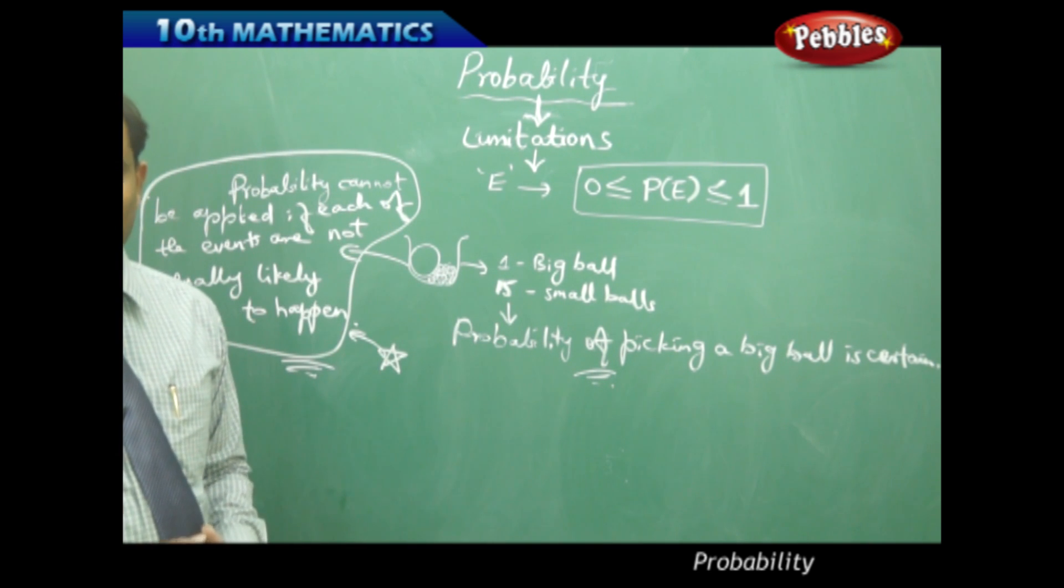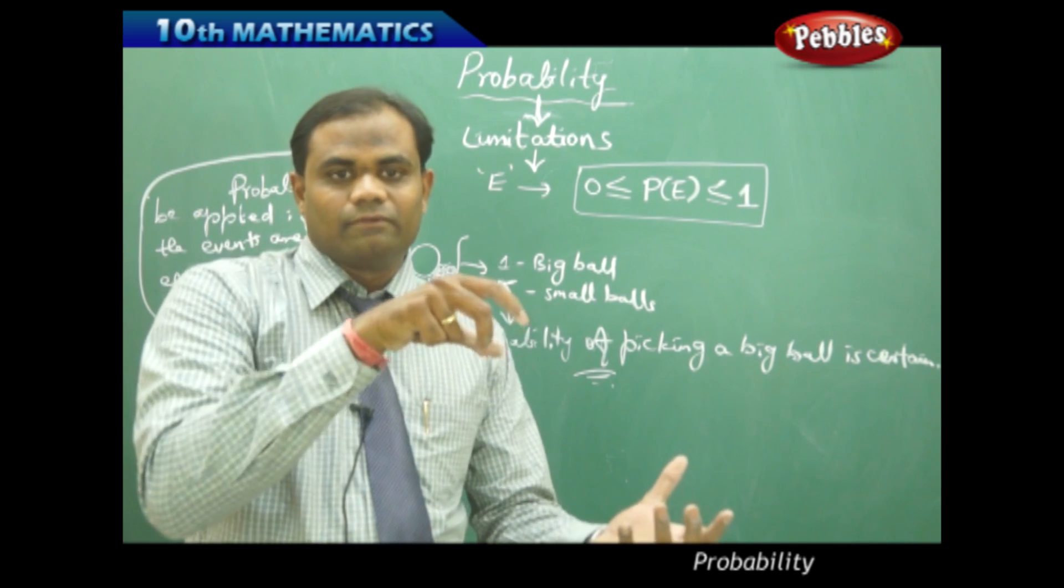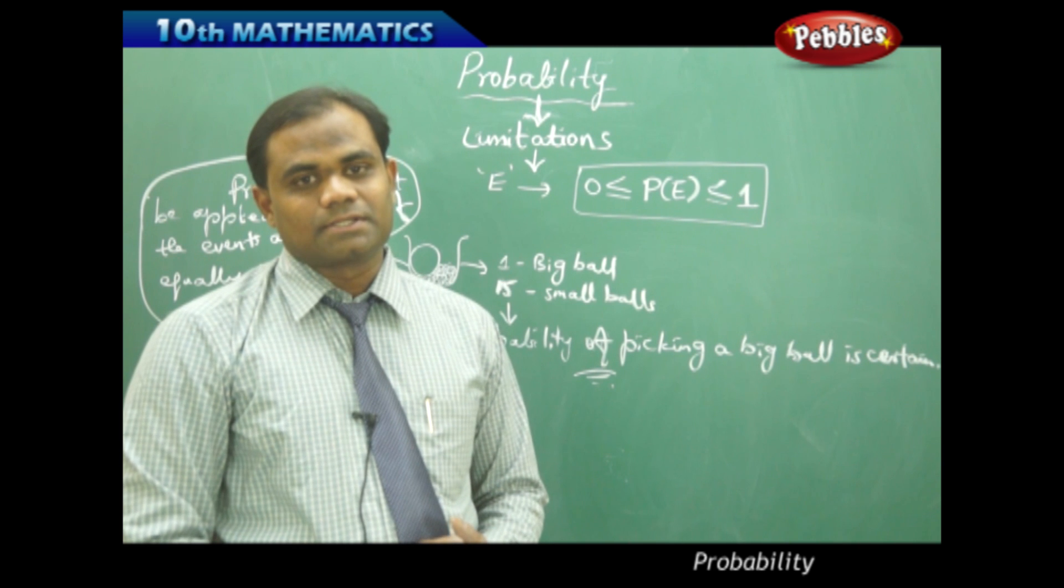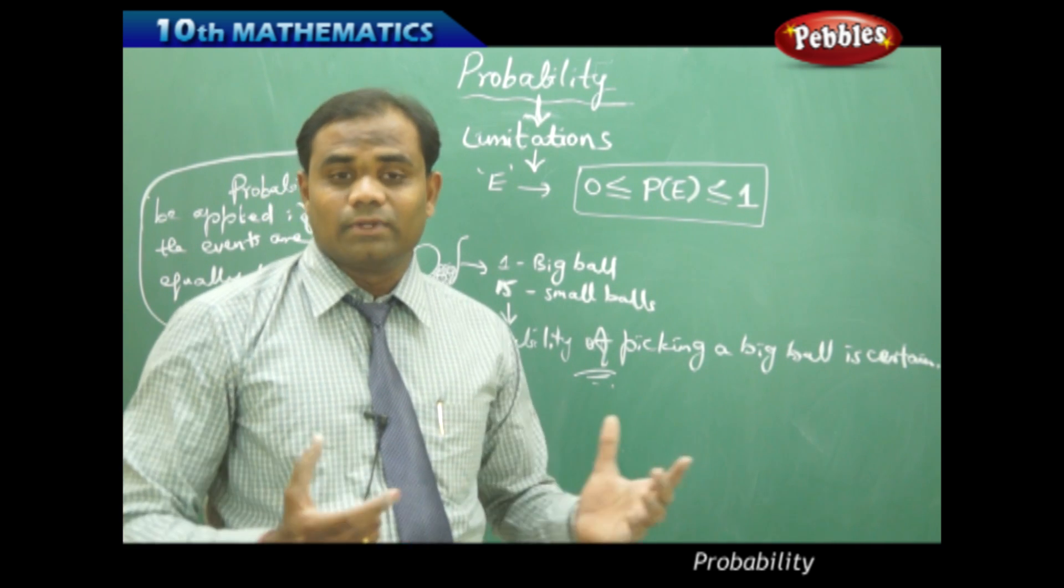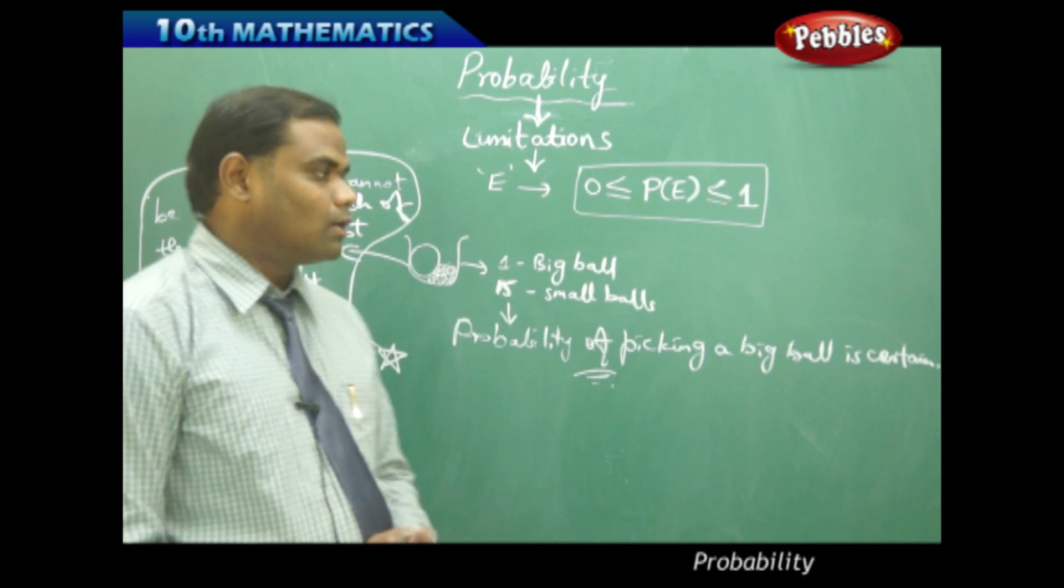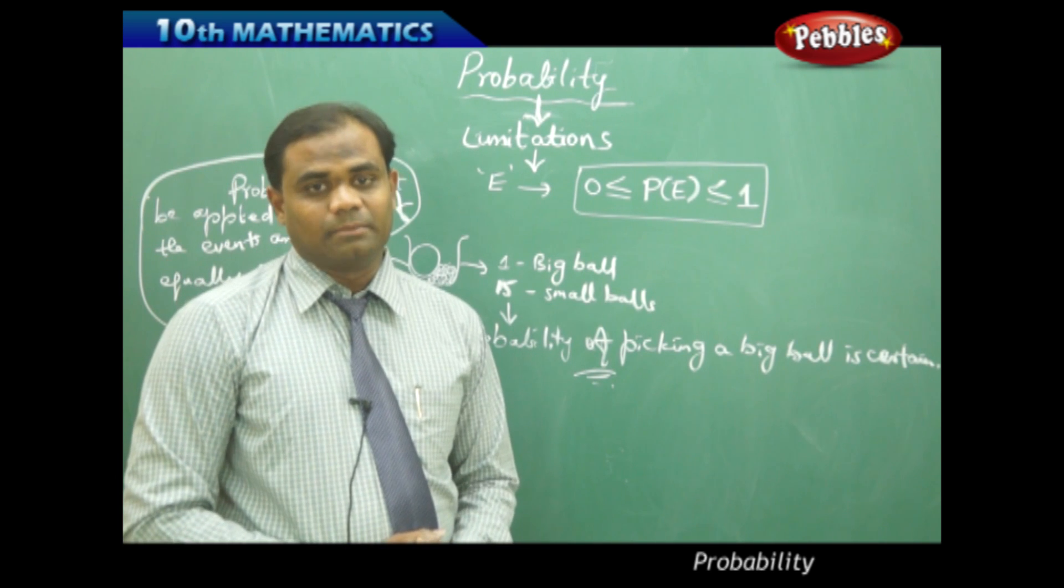Therefore, for probability to be applied, each ball should be the same size, which is called equally likely to happen and equally likely not to happen. This is how we understand the limitations of probability connected with mathematics.